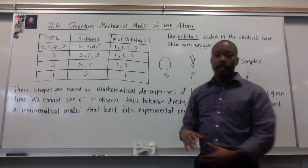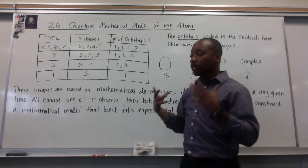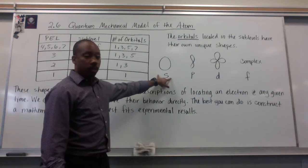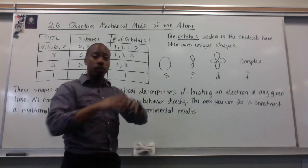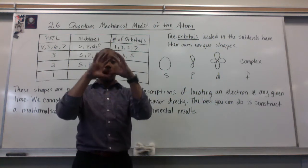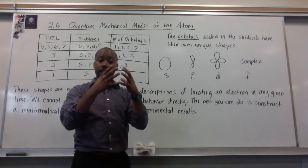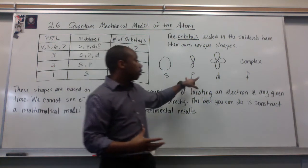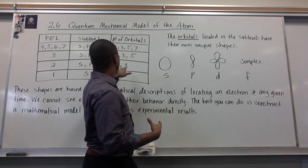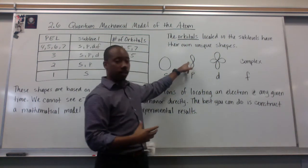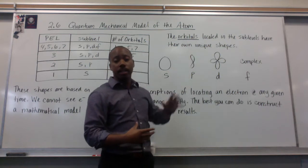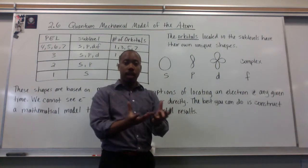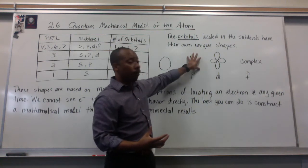The orbitals located in these sub-levels have their own specific shapes. Orbital S has a spherical shape — think three-dimensional, this is a sphere of space, and inside these orbitals are the electrons. Sub-level P has three orbitals. Each orbital looks like a sideways infinity sign, or a dumbbell shape — a three-dimensional shape — and the electrons are found in there.